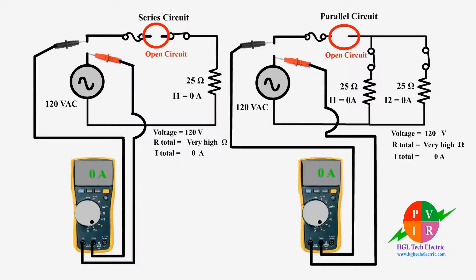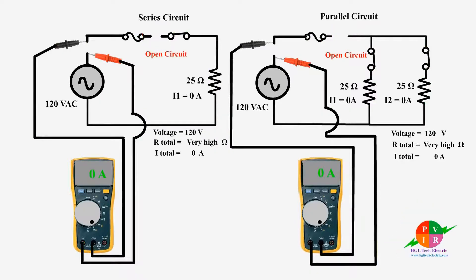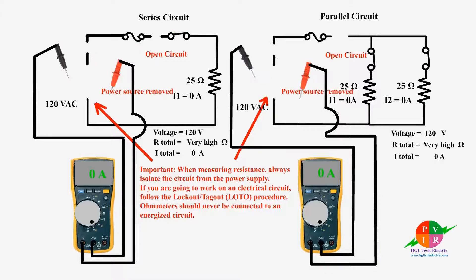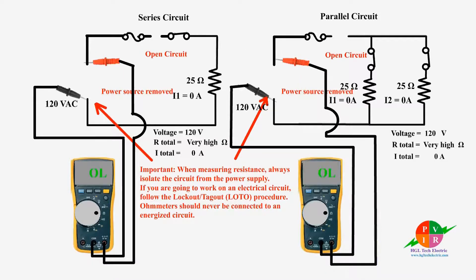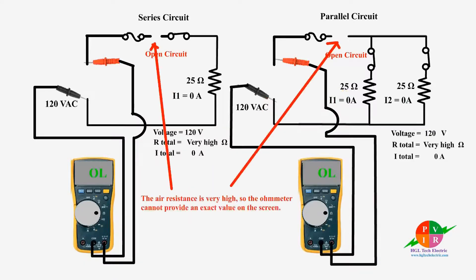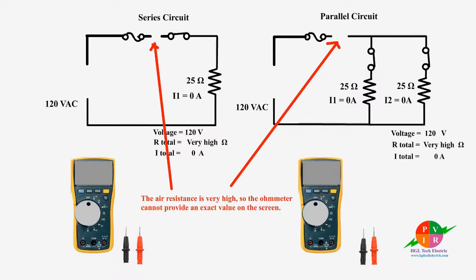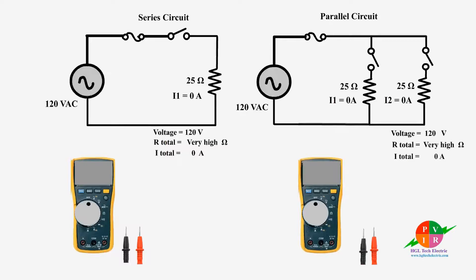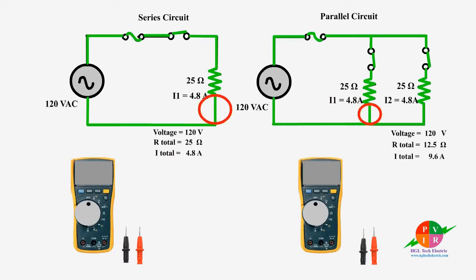Now let's look at the values when an open occurs on both circuits. As we can see, the current flow stopped, and if we measure the resistance, the digital meter indicates OL on the screen. It means that the resistance is greater than the resistance value that the meter can measure — the reading exceeds the range of the display. We locate the fault in both circuits and connect the circuits to their power sources. Now we are going to create an open circuit in a different location on both circuits and take the readings again.